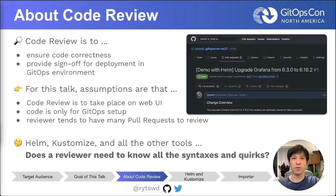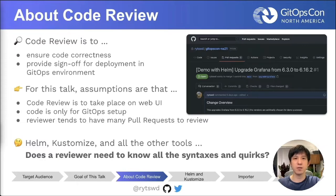We all love code review, and this is probably clear to everyone, but let's touch on this briefly. Code review is done to ensure code correctness and get explicit sign-off from reviewers. In the case of GitOps, this would be the sign-off to actually deploy something to clusters. I assume we are reviewing code from the web UI and only talking about GitOps code. Reviewers should have a good understanding of Kubernetes resources — but what about other tools? If a new configuration management tool emerges, does that mean reviewers need to learn the new syntax, best practices, quirks, and everything else? The more tools you have, the more difficult it gets to review correctly.